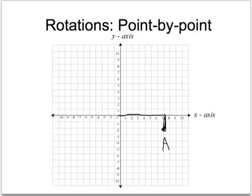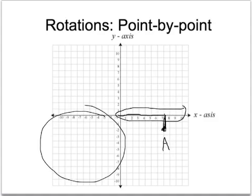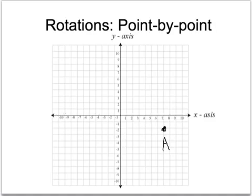Now I know that point A is going to be in this quadrant. I'm going to rotate things around in my mind, working from this axis to this axis. I'm going to use that same pattern — seven units up the axis, two units away from the axis. I'm going to work on this new axis, go seven units up, and two units away, and my new A prime will be over here.